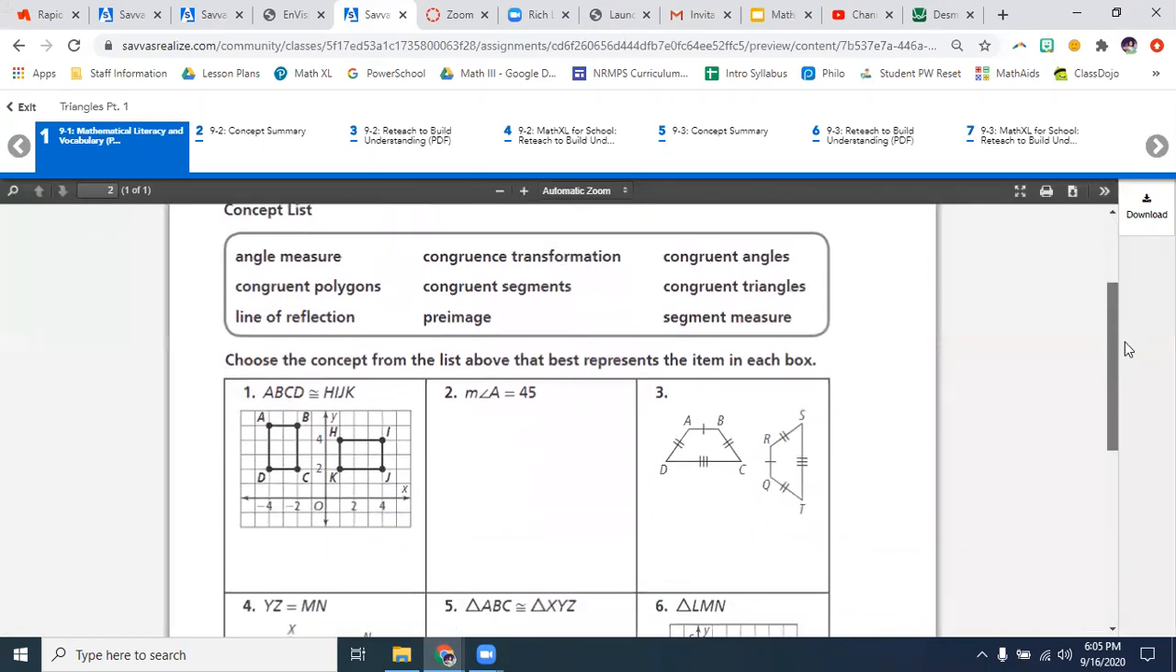We are over here. The Triangles Part 1, that's the name of the playlist. The very first thing that you're going to see is a worksheet. It's going to be a purple icon, 9-1 Literacy and Vocabulary. I'm going to go through this pretty quickly so that this video is not too long.